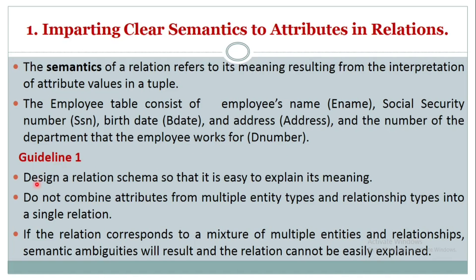As per guideline 1, design the relation schema so that it is easy to explain its meaning. Do not combine attributes from multiple entity types and relationship types into a single relation. If the relation corresponds to a mixture of multiple entities and relationships, semantic ambiguities will result. The summary of guideline 1 is that we are not supposed to combine the attributes of multiple entities, as this may lead to redundancy or anomalies.